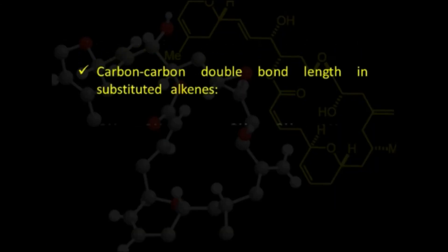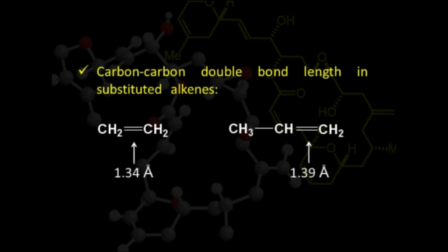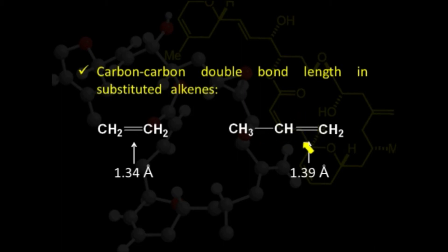Because of hyperconjugation, a change in bond length is also observed. On the basis of a simple alkene structure, we expect the carbon-carbon double bond to be 1.34 Å. But in propene, because of hyperconjugation, the carbon-carbon double bond is slightly lengthened as it acquires slightly single bond character, and hence the bond length is increased.